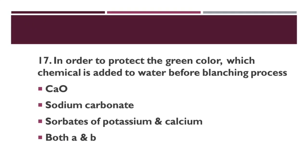To protect the green color, which chemical is added to water before the blanching process? Option A: calcium oxide. Option B: sodium carbonate. Option C: sorbates of potassium and calcium. Option D: both A and B. Correct answer is both A and B — calcium oxide and sodium carbonate are added to water before blanching to preserve the green color.